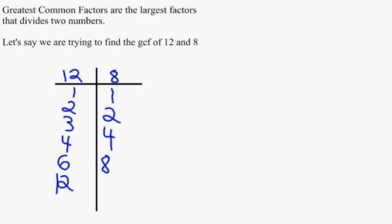Greatest Common Factors are the largest factors that divide two numbers. Let's say we are trying to find the GCF of 12 and 8. First, we can list all the factors of each.